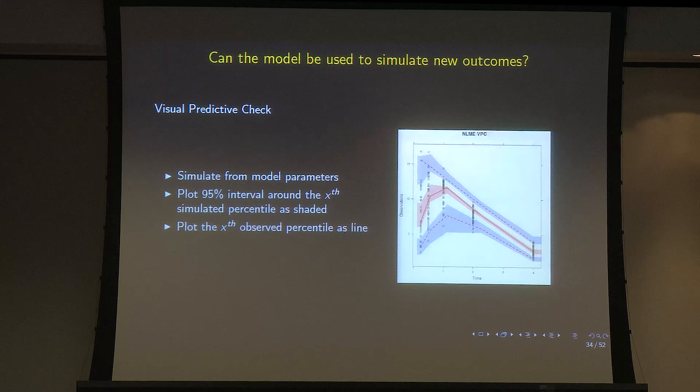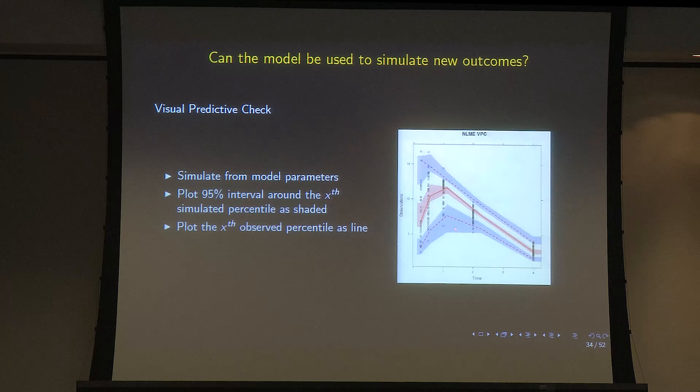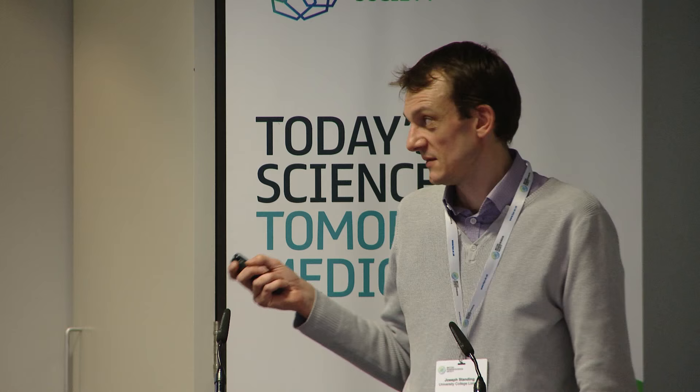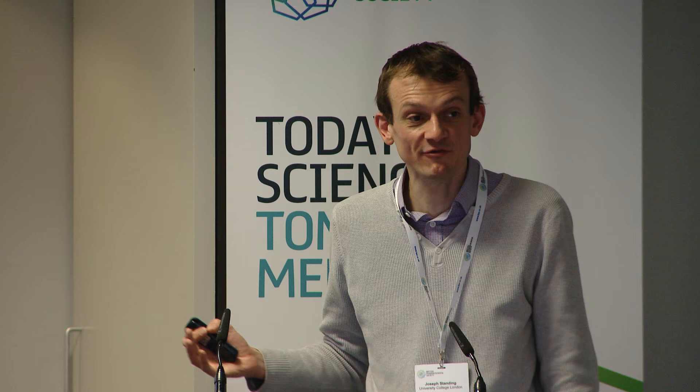Most population PK papers now include simulation-based diagnostics — the visual predictive check. We take the final model with its means and variance terms, do simulations by drawing randomly from those parameters, and construct 95% confidence intervals of the percentiles of the data. Overlaying the observed data, we want to see the observed lines lie within the shaded areas. If they do, the model simulates well and can be used to simulate different dosing conditions and come up with dose recommendations.